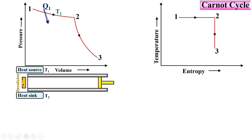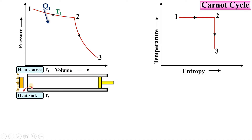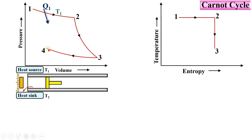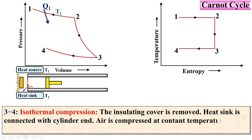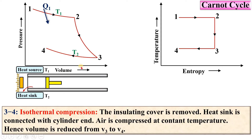Process 3 to 4 — isothermal compression: the insulator is removed and the heat sink is connected to the cylinder end. The air is compressed from state 3 to state 4 at constant temperature T2, so volume decreases from V3 to V4. On the TS diagram this is a horizontal line. During this process heat is rejected, denoted Q2.